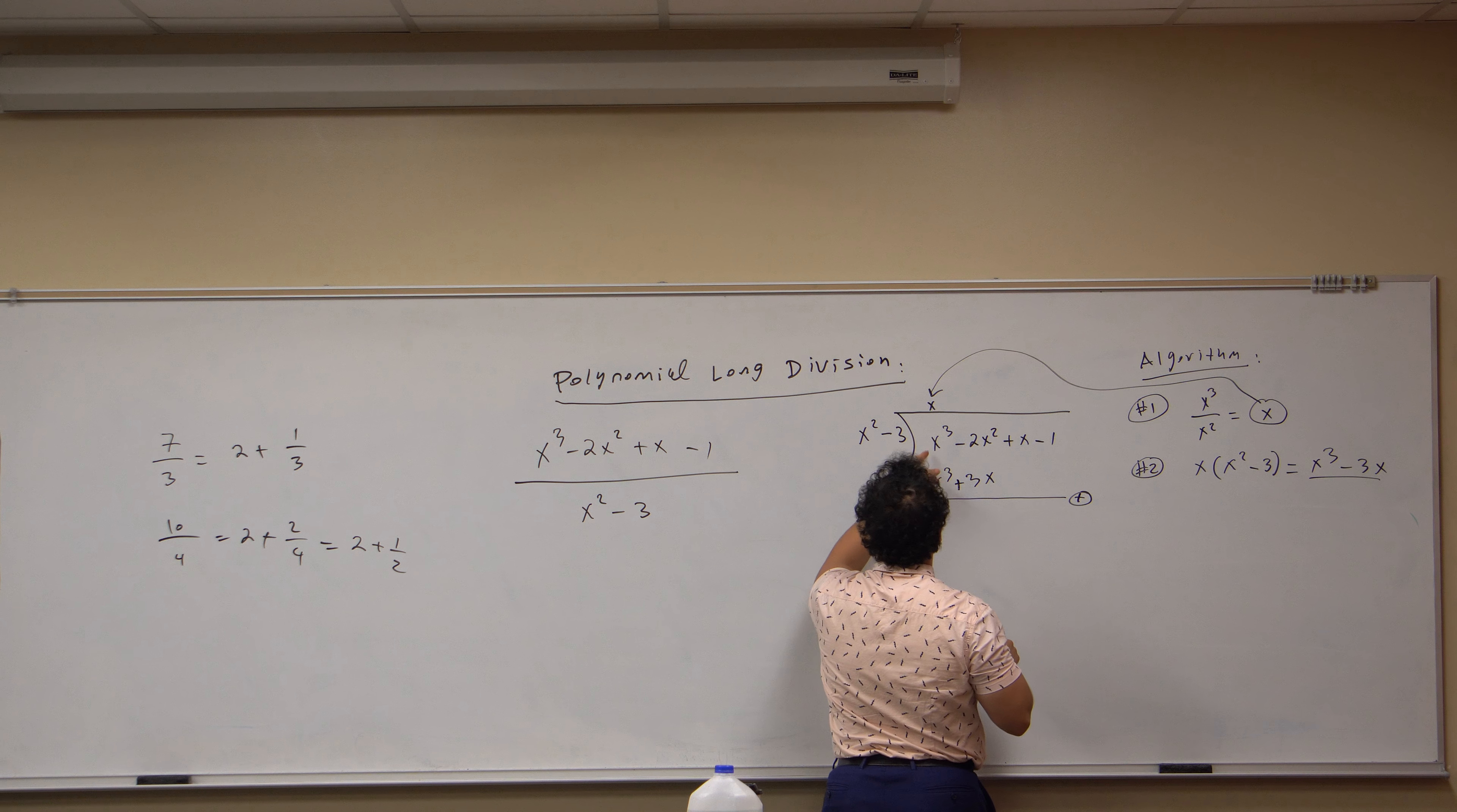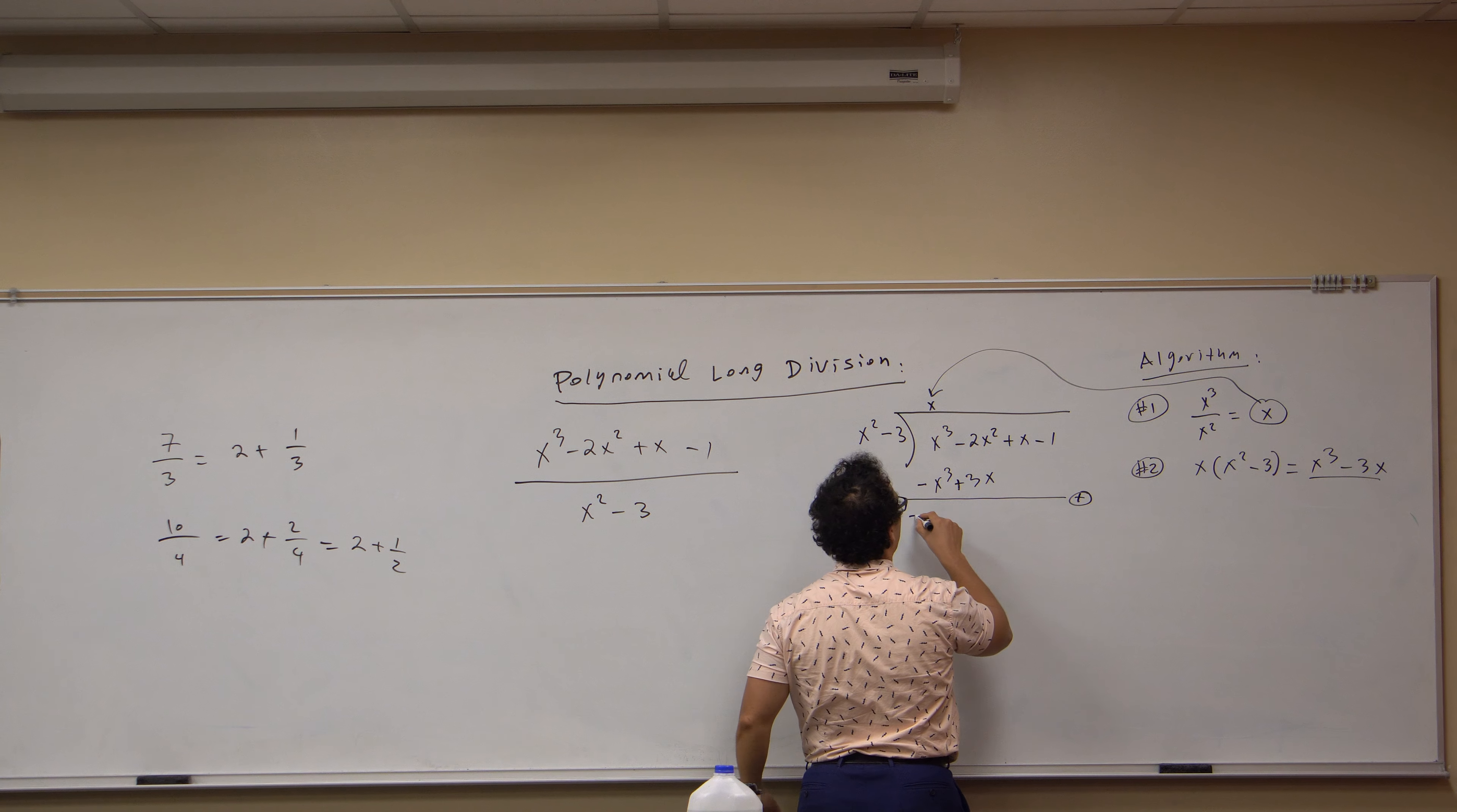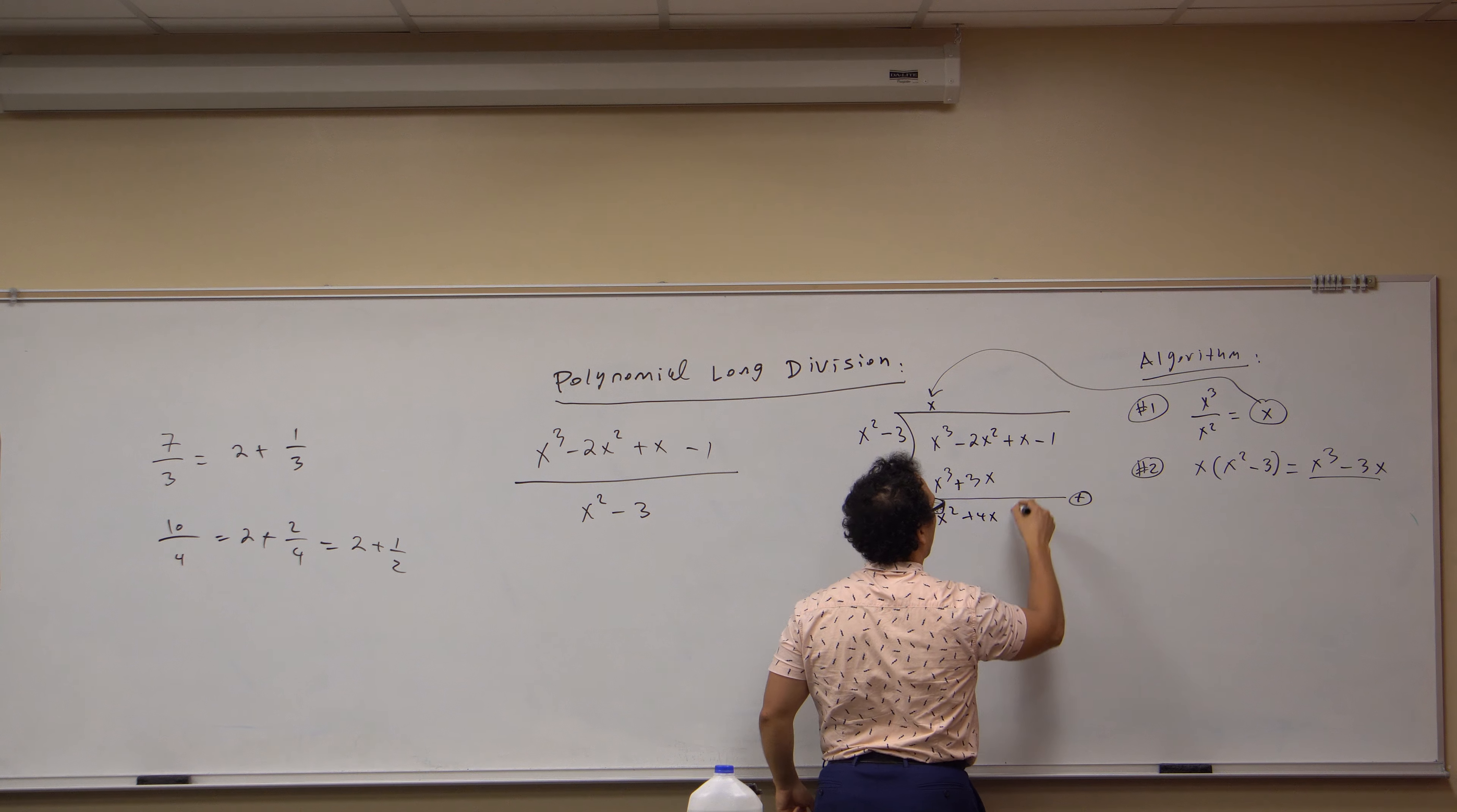Now we group like terms. These add up to zero, so they go away. There's no x squared terms, so this comes down, and the three plus the one gives me four x minus one.